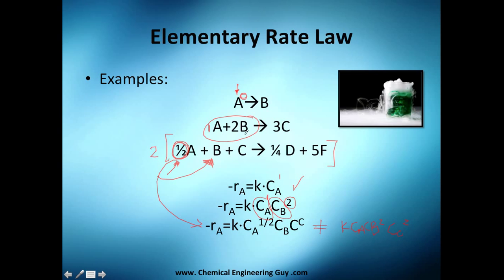So once again, we have concentration of A to the half power, or this is actually square root, times concentration of B to the 1, times concentration of C to the 1 power.